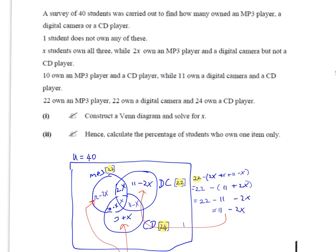If they didn't say but not a CD player, that would simply say that 2x people owned a digital camera and MP3 player, so it would be the total intersection of digital camera and MP3 player. In that case, you would have to put just one of the x's in here and the other x in here, but they don't say that.